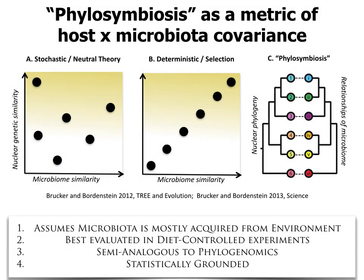We're interested in host-by-microbiome interactions. One possibility is there's no correlation between microbiota similarity and nuclear genetic similarity — a stochastic smattering. In contrast, a deterministic model holds that the amount of genetic divergence in the host background should predict the amount of microbiome divergence. This is somewhat analogous to a neutral theory of ecology versus one where host background is the selective pressure on microbiome structure. If the deterministic model is true, you'd expect something we call phylosymbiosis.